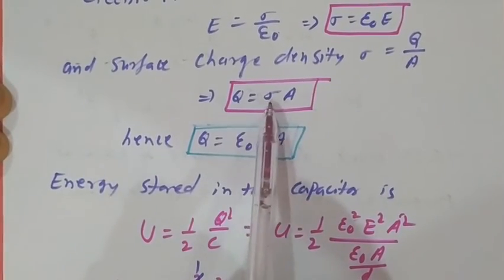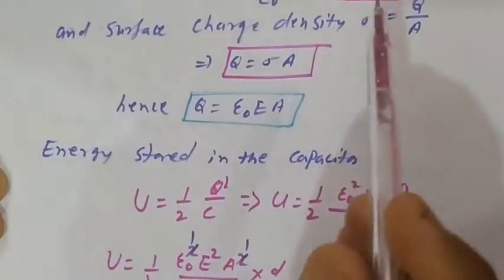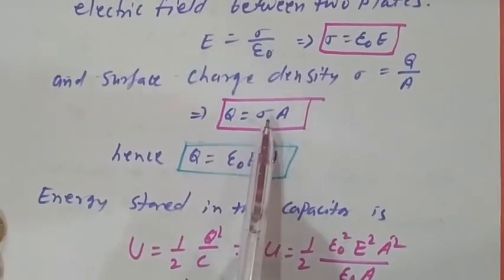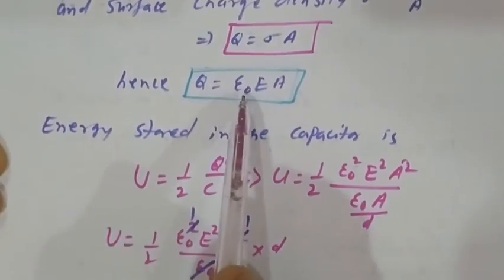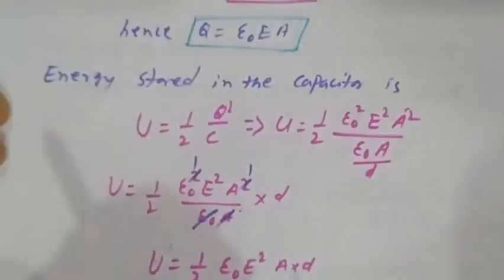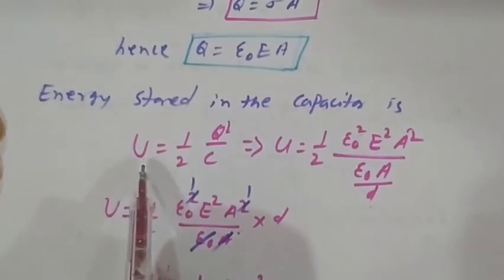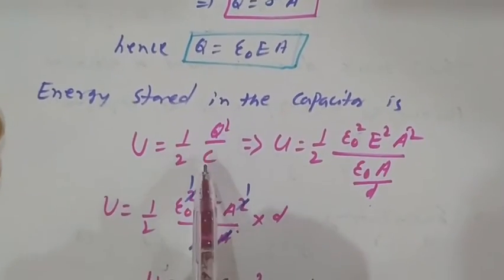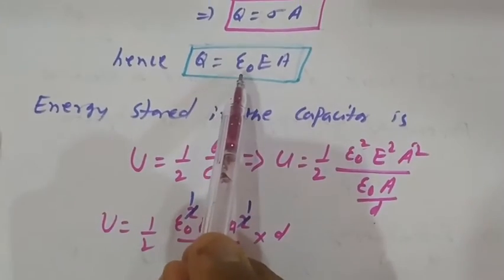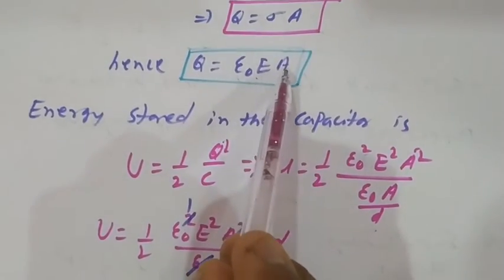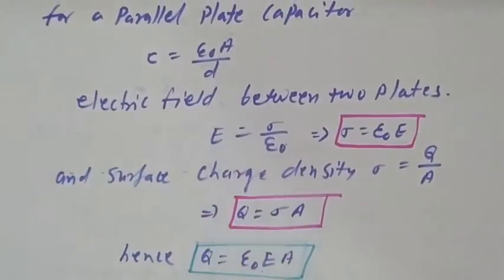Surface charge density σ = Q/A, so Q = σA. Hence Q = ε₀E × A, so Q = ε₀EA. The energy stored in the capacitor is U = (1/2)Q²/C. We substitute Q = ε₀EA and C = ε₀A/d.